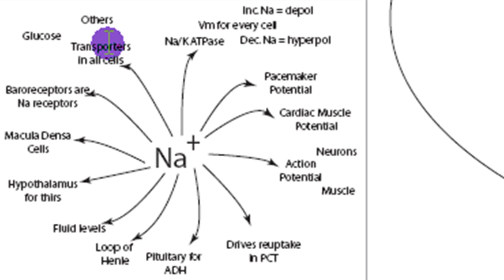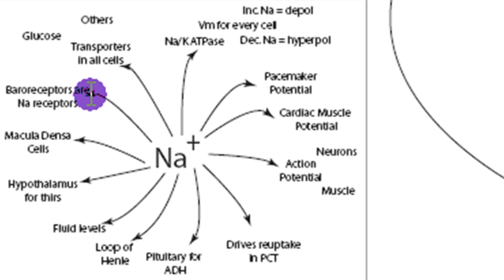Another thing is the glucose transporter. When a cell needs to get glucose inside, often what it'll do is take advantage of the fact that the sodium-potassium ATPase has put a lot of sodium outside the cell. It'll let that sodium come back in — it wants to diffuse back in — and the glucose transporter will let that sodium come back in as long as it brings glucose with it.